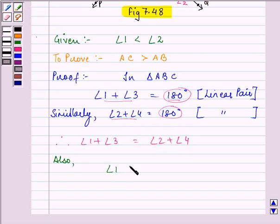Also, angle 1 is less than angle 2. It is given to us. So this means that angle 3 will be greater than angle 4. Let us take an example. It is saying that angle 1 is less than angle 2.